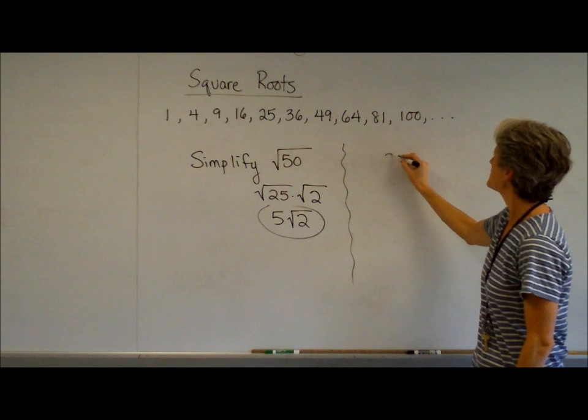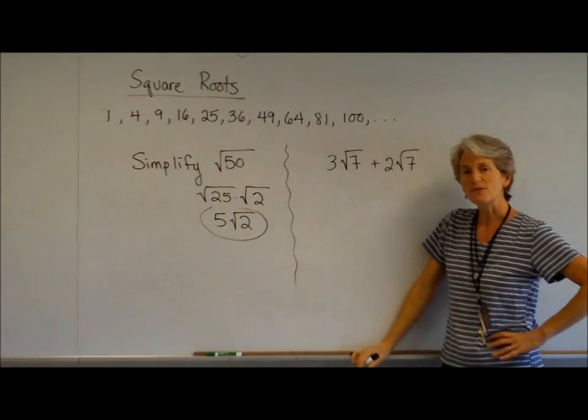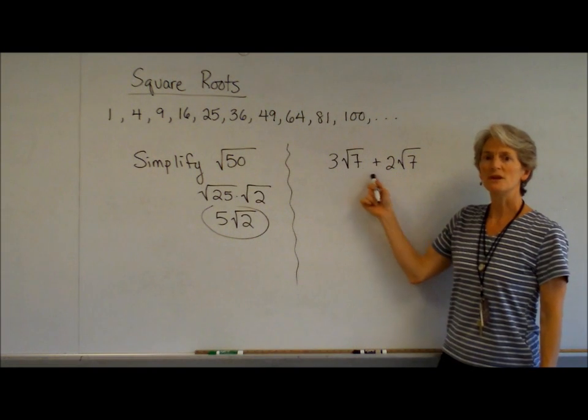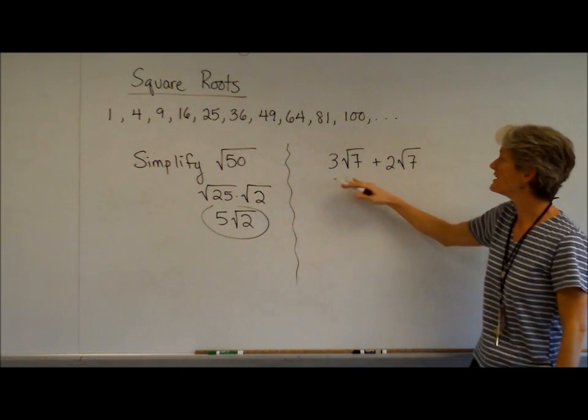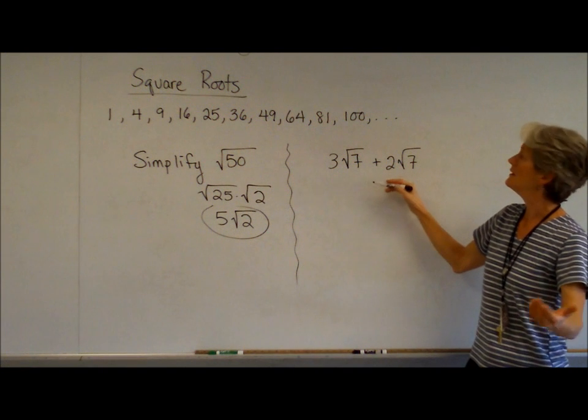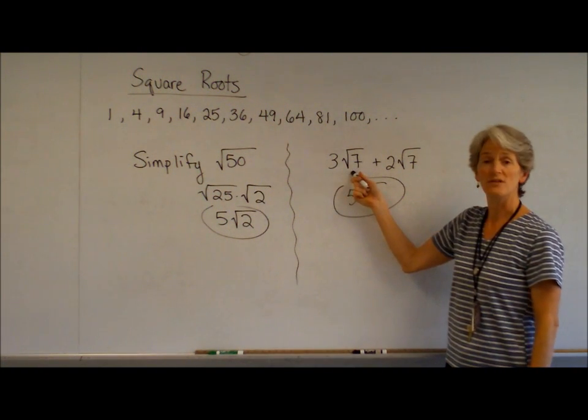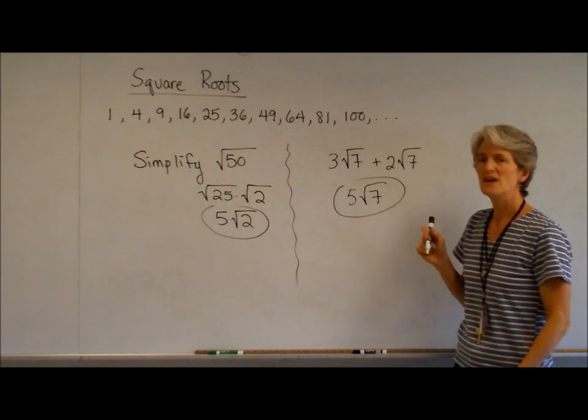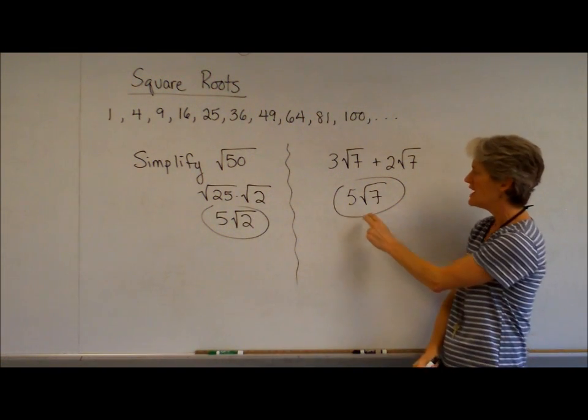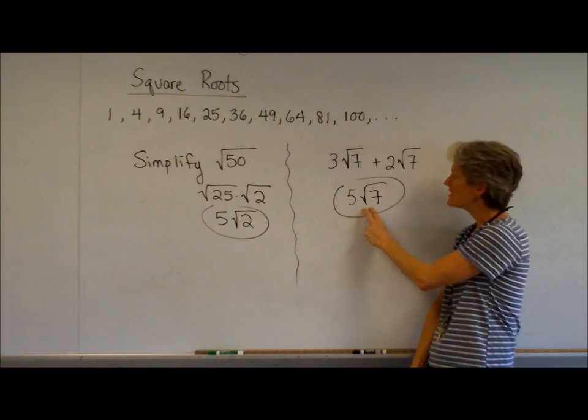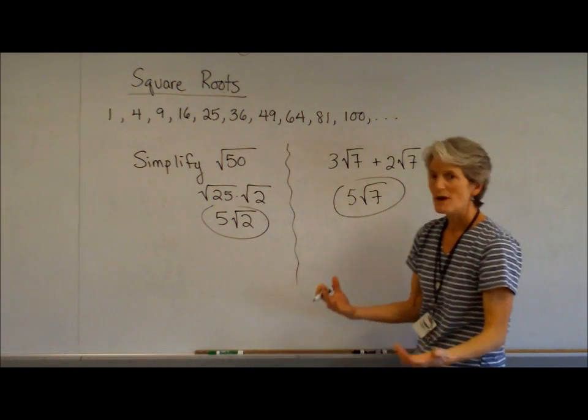If I had something like 3 square root of 7 plus 2 square root of 7, that's just like 3x plus 2x. What's 3x plus 2x? 5x. Same thing here. These are like terms. 3 root 7 plus 2 root 7 equals 5 root 7. If you check with a calculator, 3 times root 7 plus 2 times root 7 gives the same value as 5 times root 7. These are equivalent.